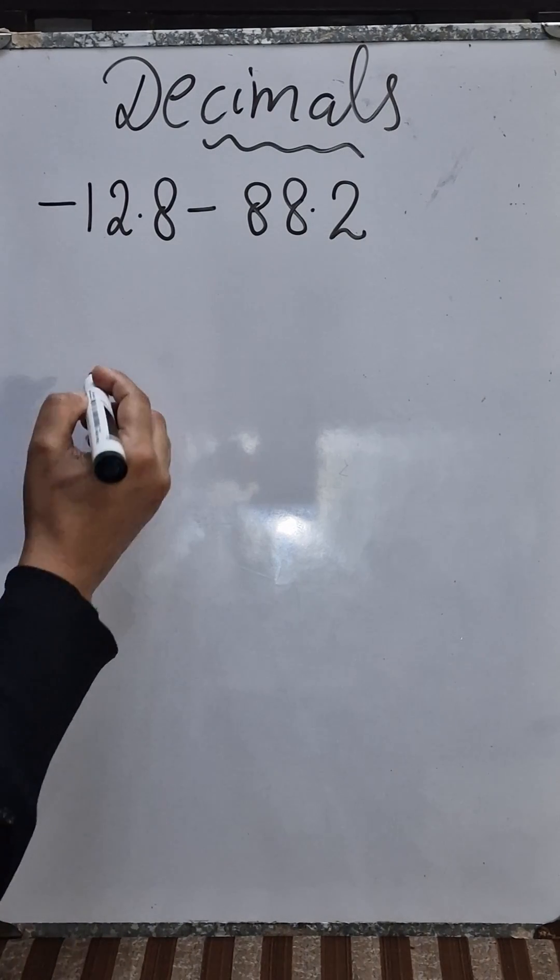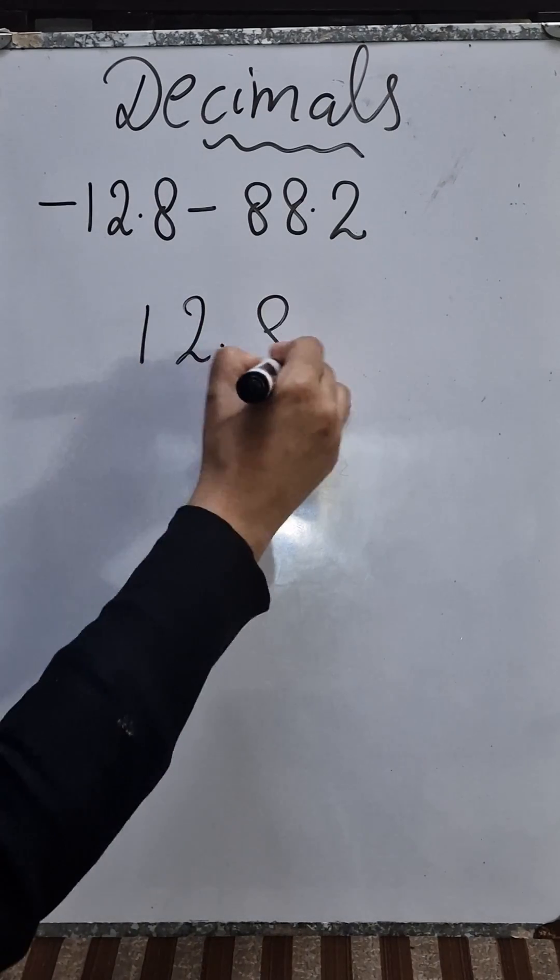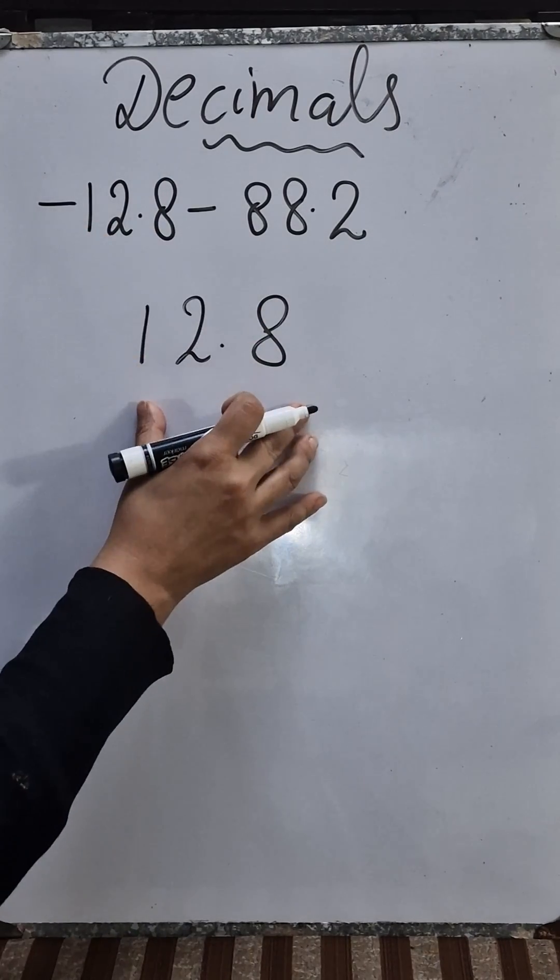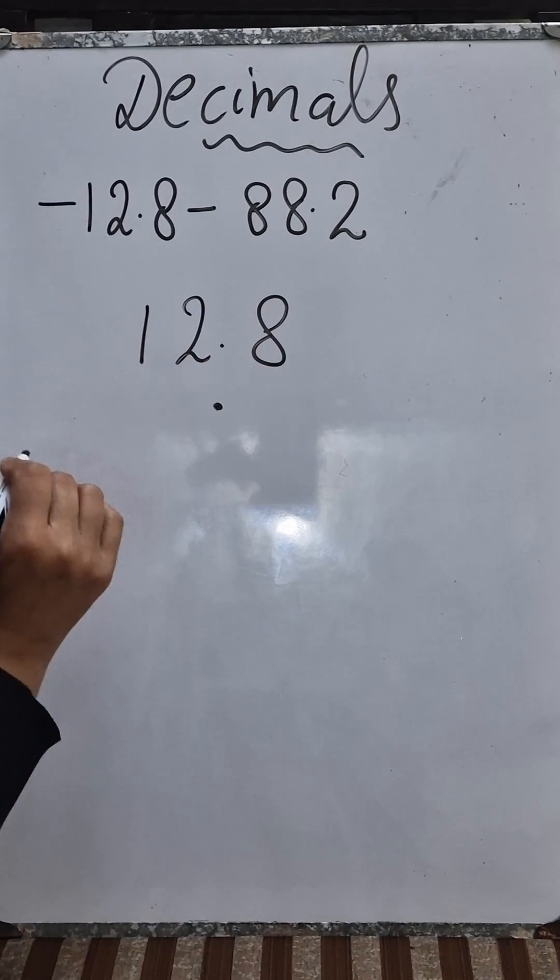First we are going to arrange it like 12.8, and then 88.2. Decimal will come under decimal when you are adding or subtracting. After the decimal there is a 2, so 2 you are going to write under 8.